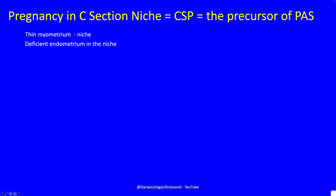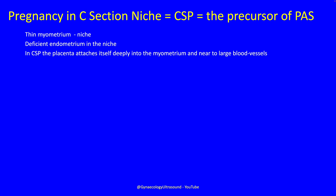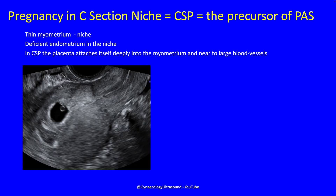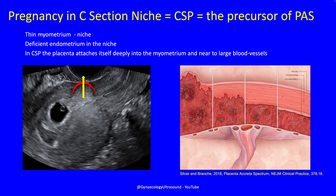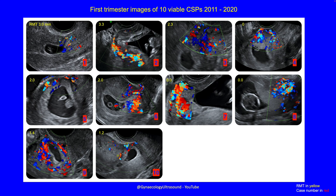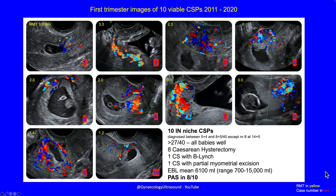When you have a very thin myometrium in the niche and deficient endometrium in this area, the placenta will attach deeply into the myometrium and go for large blood vessels nearby. When that happens you develop an abnormally adherent placenta — it can be placenta accreta, increta, or percreta. This is a selection of cases from our hospital over 10 years where the pregnancy was implanted in the niche. All were diagnosed early; all 10 babies were delivered after 27 weeks, but 8 of the 10 had a caesarean hysterectomy, and all eight had placenta accreta spectrum.